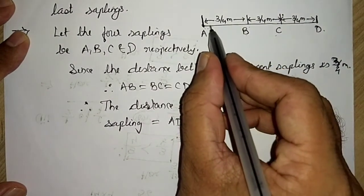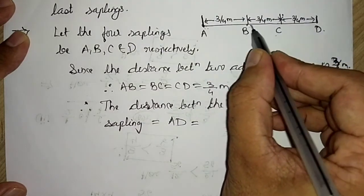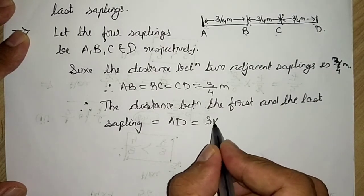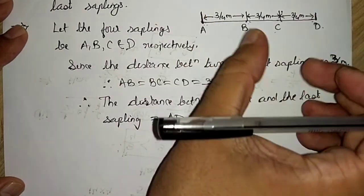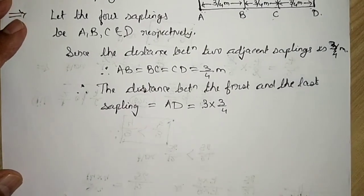Can we say 1, 3 by 4, 1 time, 3 by 4, 2 times, and 3 by 4, 3 times. Can we say 3 times 3 by 4? Distance AD is made up of 3 times 1, 2 and 3 times 3 by 4, right?